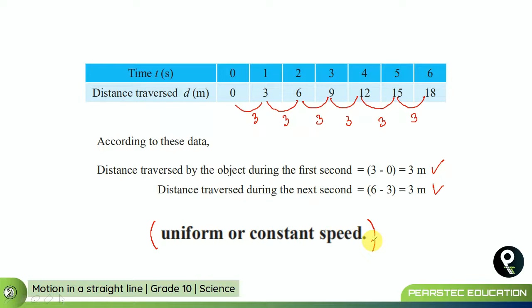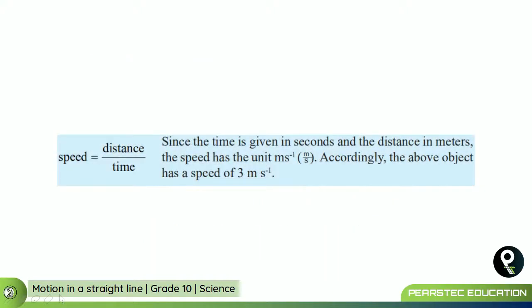When somebody is traveling with time, and the distance is not changing, that is known as uniform or constant speed. Now, you know that distance hasn't got a direction. It can be any direction. They are not talking about displacement. So, uniform or constant speed is explained like this.